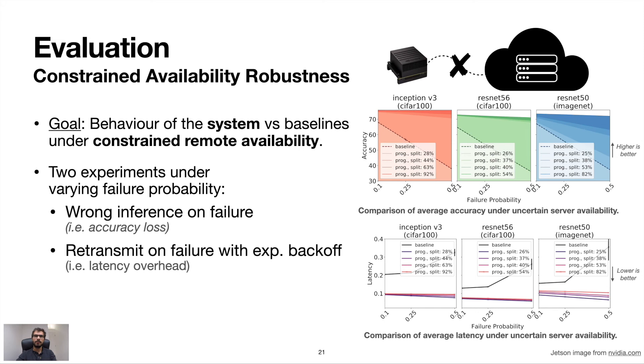Different lines in the progressive variant represent different split points, and thus different number of local to the device results, while the baseline represents a non-progressive variant of the network. Over two scenarios in different probabilities, spin is able to achieve higher accuracy or lower latency over the non-progressive offloading baseline, since it always has one or more local results to fall back on.